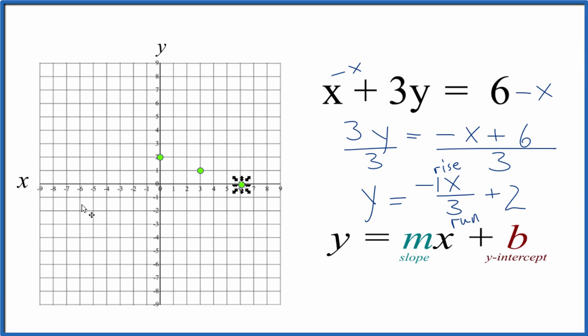You can see they all line up there. Let's put a line through that. Then we could put arrows to show that this goes to infinity, and that's the line for x plus 3y equals 6.